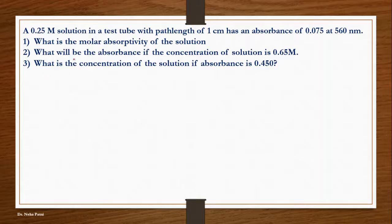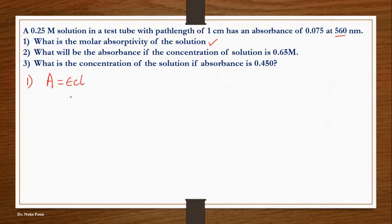The question says: a 0.25 molar solution with a path length of 1 cm has an absorbance of 0.075 at 560 nm. First, they ask: what is the molar absorptivity of the solution? I hope you remember that A is equal to ε·C·L — absorbance equals molar absorptivity times concentration times path length. If you don't remember, you can watch my previous Lambert-Beer law video where I discuss the derivation of this equation in detail. Now they want you to calculate ε.